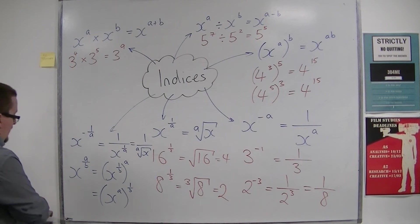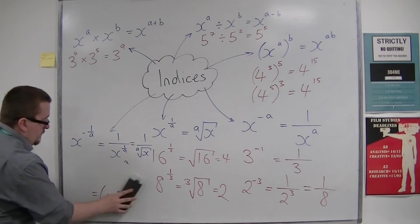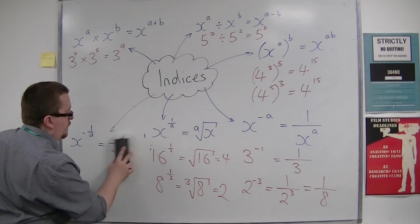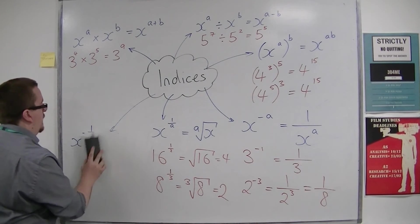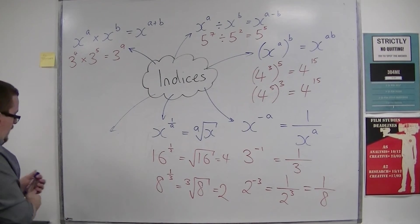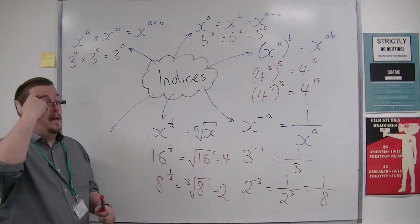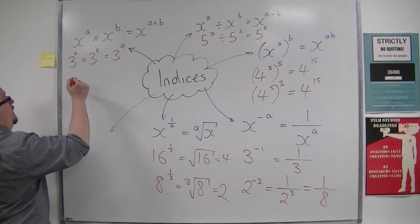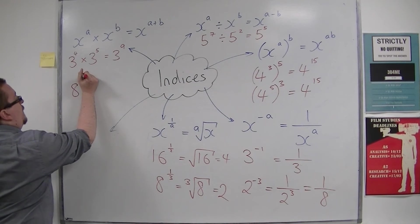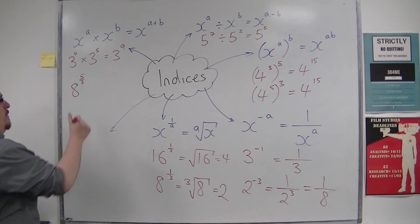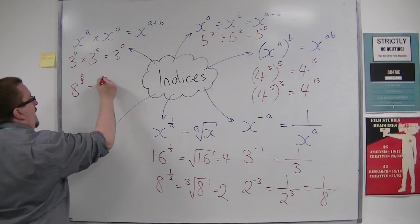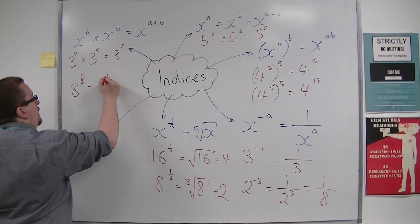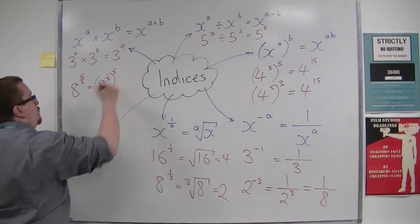As an example of that, I would probably say something like, if you were looking at 8 to the power of 5 thirds, then this is equal to 8 to the power of a third to the power of 5.